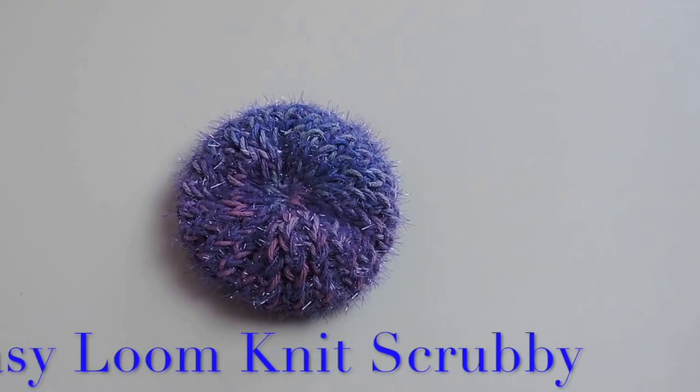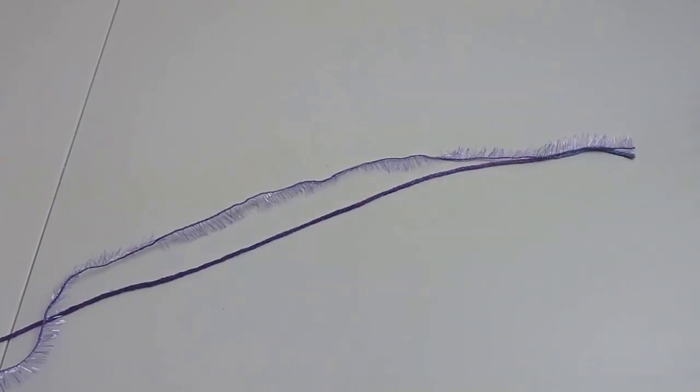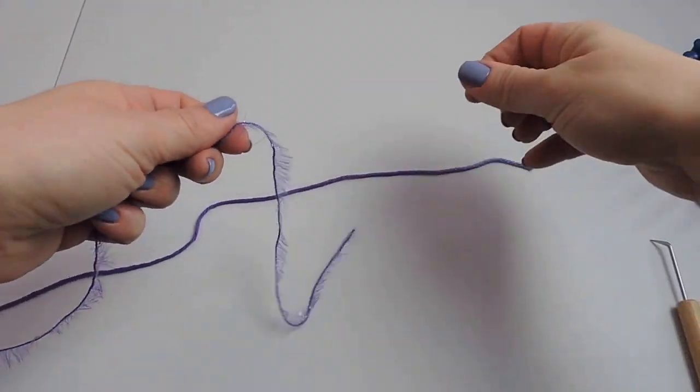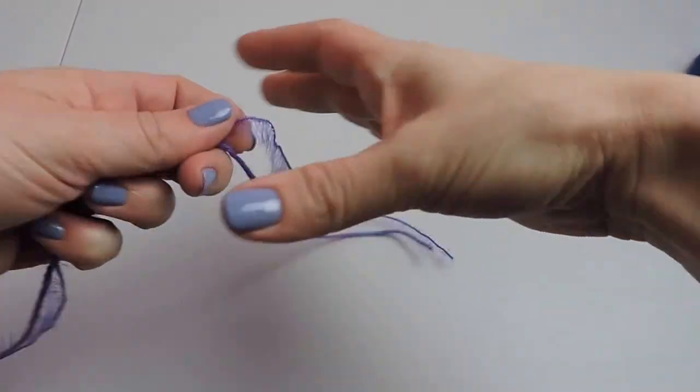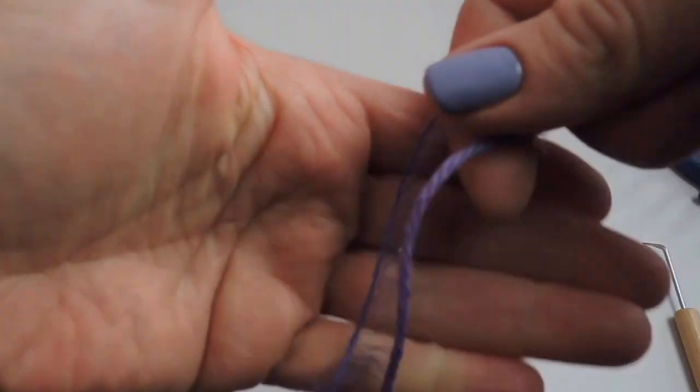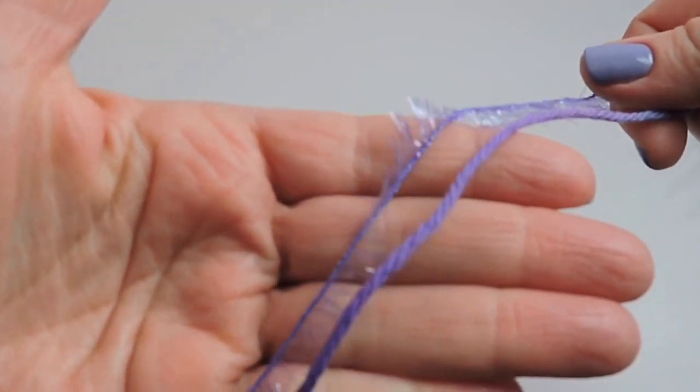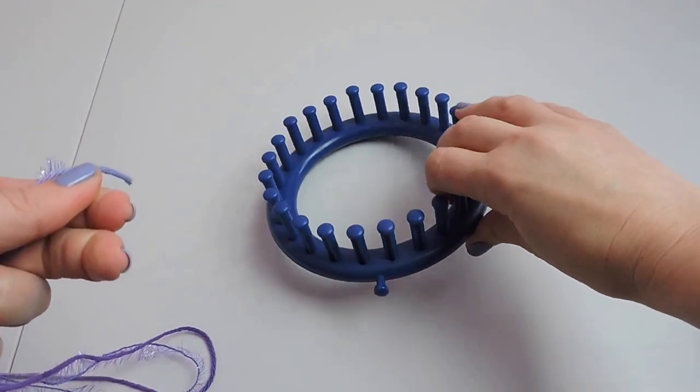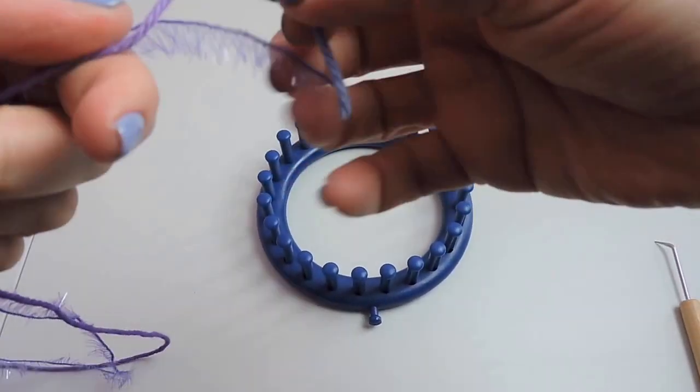Hi everyone! Today we're going to learn how to loom knit an easy scrubby. You'll need a 24 peg loom, a darning needle, scrubby yarn, scissors, your loom knit tool, a cotton yarn, and we're gonna start by casting on.